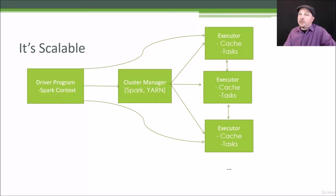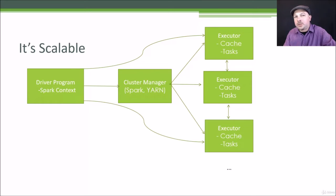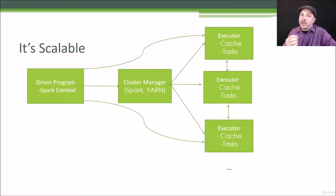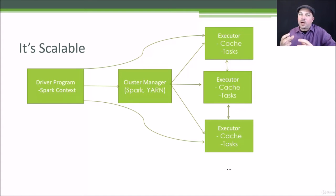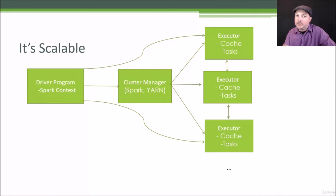So how is it scalable? You write a driver program — it's just a little script that looks like any other Python script — and it uses the Spark library to write your script with. Within that library, you define what's called a Spark context, which is sort of the root object that you work within when you're developing in Spark. From there, the Spark framework takes over and distributes things for you.